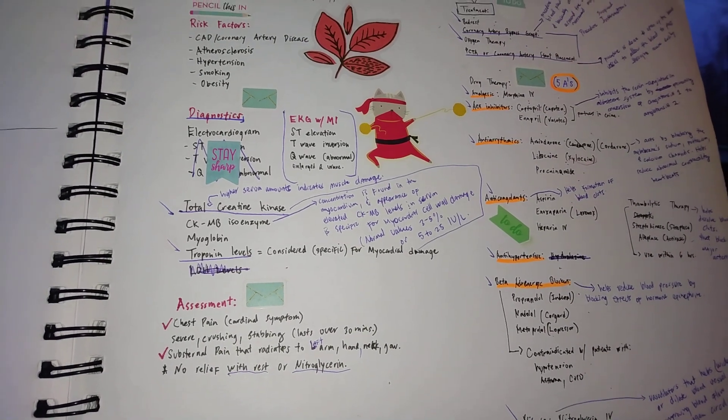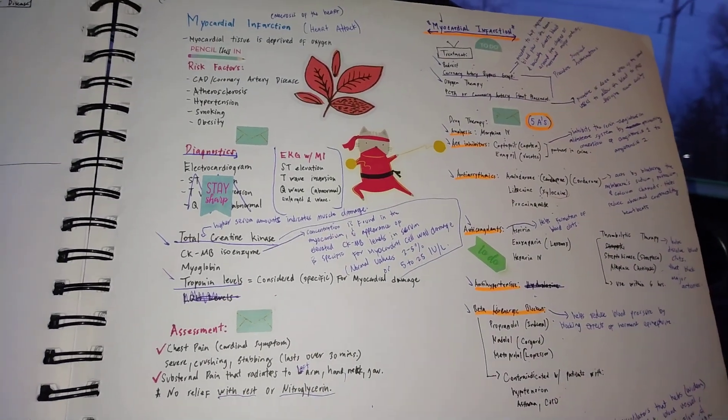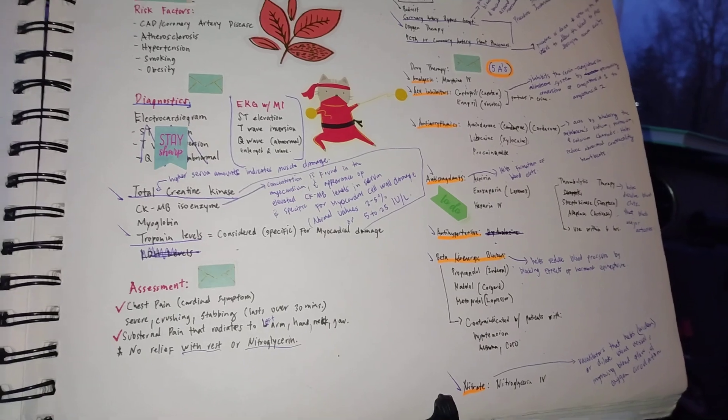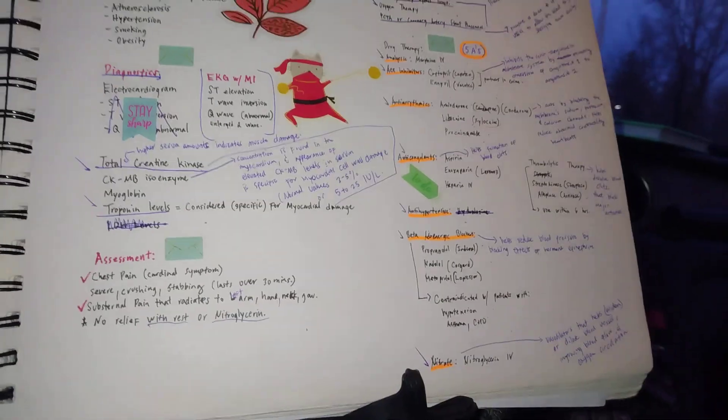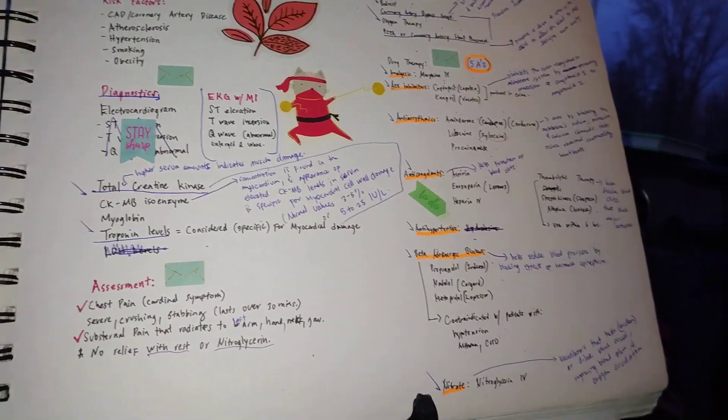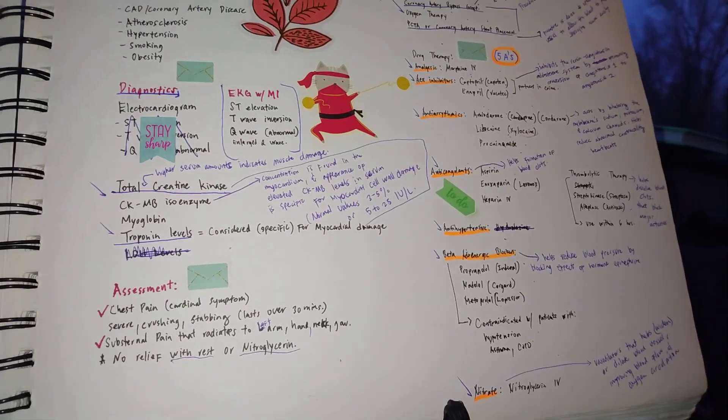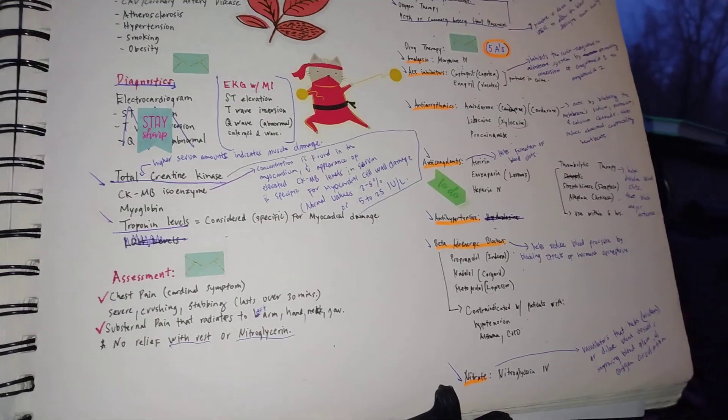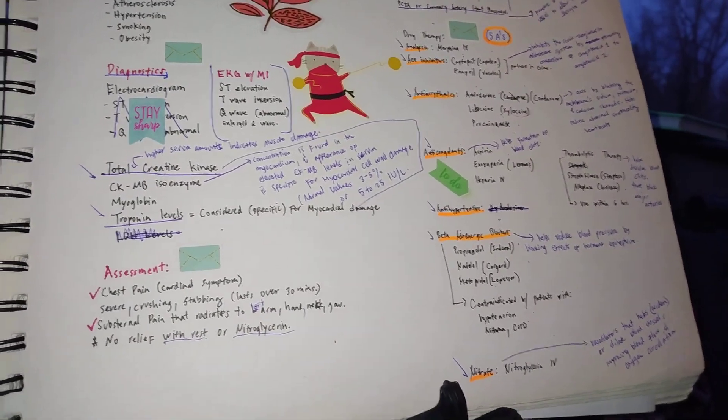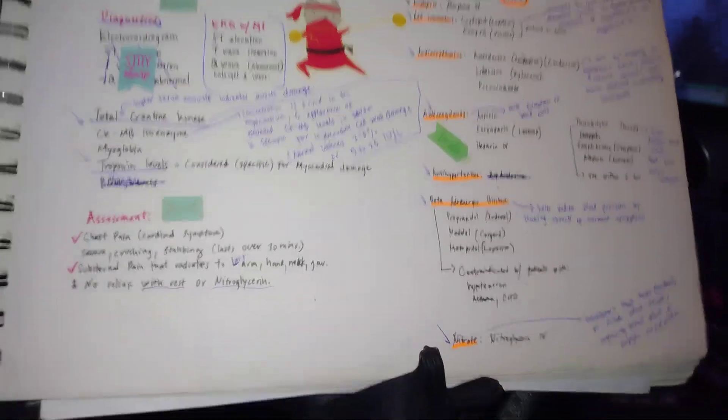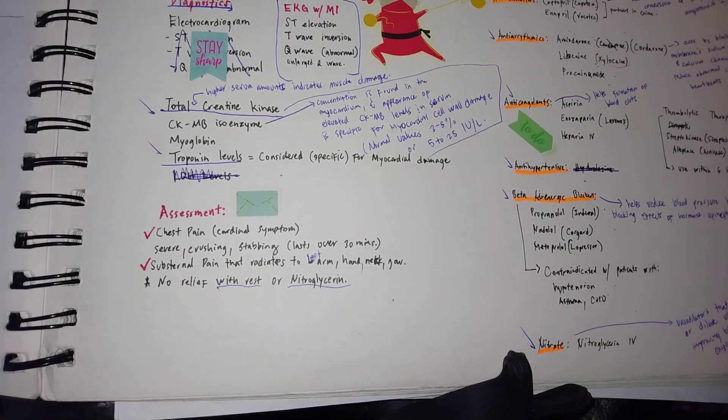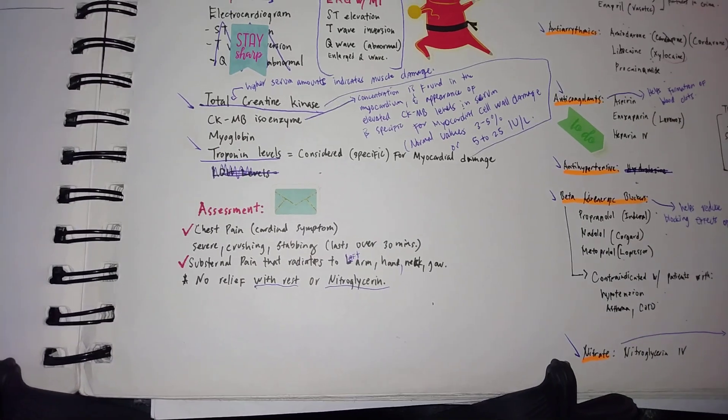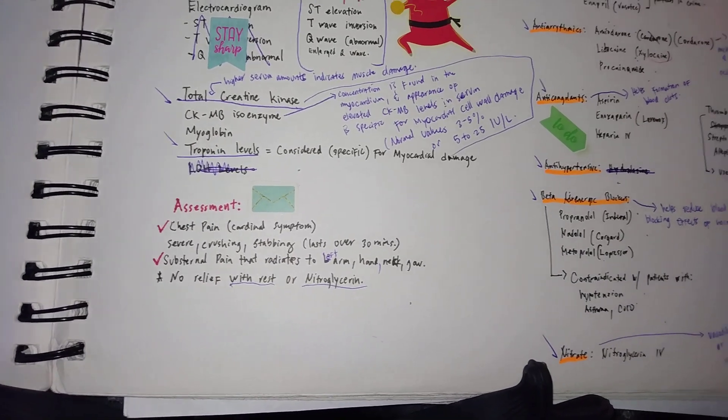We're talking about our analgesics, our ACE inhibitors, our antiarrhythmics, our anticoagulants, antihypertensives, and of course our adrenergic blockers, specifically beta-adrenergic blockers. And of course, we're also going to be giving nitrates or nitroglycerin IV as necessary.